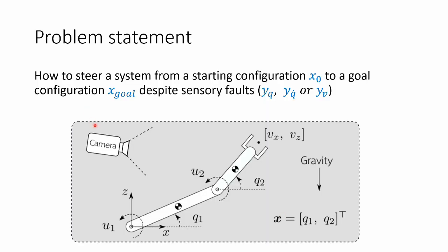The problem statement. We have a robotic arm which has some state, which comprises of the joint positions and velocities. So for this two-dimensional robot arm, the state would have four entries. We have some starting configuration x0. I want to arrive at some goal, x goal.